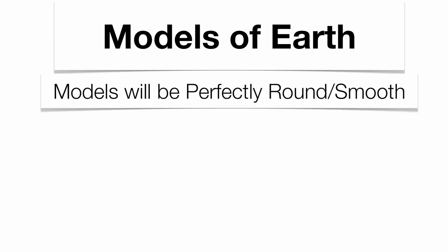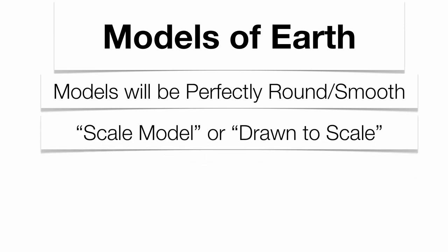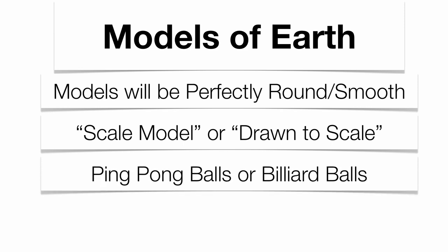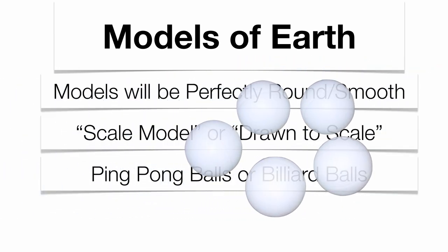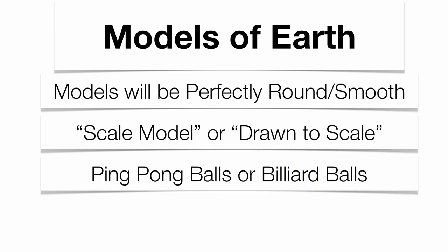Certain models we go by are perfectly round and perfectly smooth. Think of any object that's perfectly round and perfectly smooth — we go by the terms 'drawn to scale' or 'scale model.' A ping pong ball or a billiard ball are really good examples of scale models of the Earth. If you blow them up to the size of the Earth, they'd still look perfectly round and perfectly smooth. In a photograph of the Earth, you don't really see the high mountains or the low ocean trenches — it looks perfectly round and perfectly smooth. Billiard balls and ping pong balls are two examples that tend to pop up quite a bit on the Regents exam.